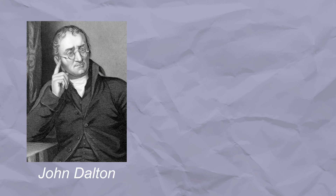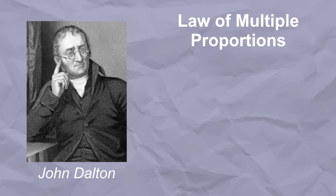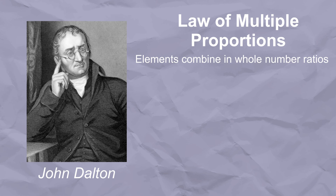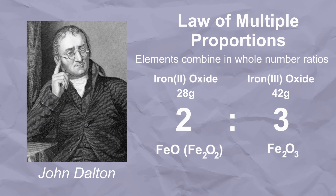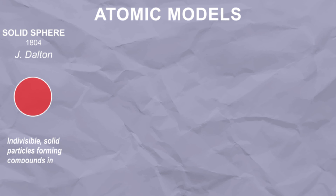Around 1804, English chemist John Dalton devised a theory called the law of multiple proportions. It states that two elements can combine in whole number ratios to form compounds. For example, he took two iron oxides — iron 2 oxide and iron 3 oxide — and measured how many grams of oxygen is in 100 grams of compound. 28 grams in the first one and 42 grams in the second one. 28 and 42 form a ratio of 2 to 3. And when we look at chemical formulas, it is true. So he speculated that compounds are made of a set amount of invisible particles — atoms.